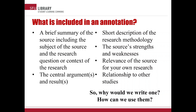You might be wondering what goes into an annotation. An annotation usually includes several elements: a brief summary of the source, its central argument and results, a description of the research methodology, the source's strengths and weaknesses, its relevance for your research, and its relationship to other studies. It is important to note that your specific annotations don't have to include everything listed here — these are just a general list of elements you might come across when writing your own annotations.